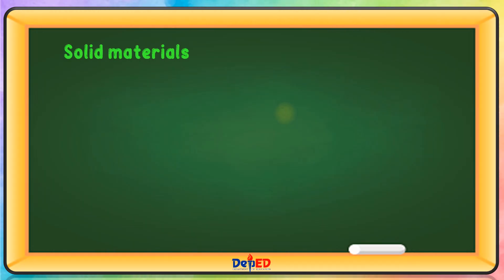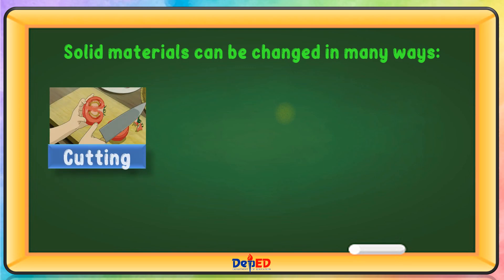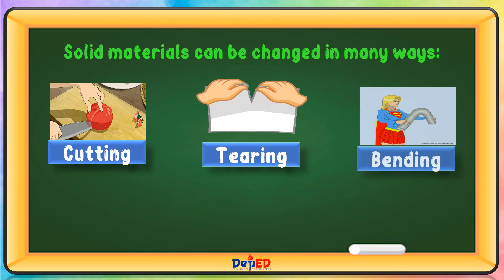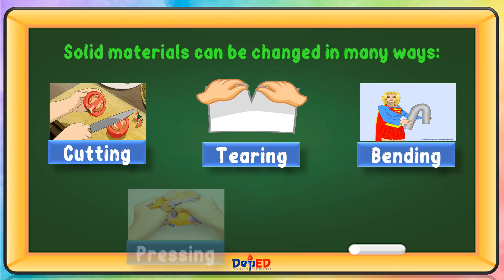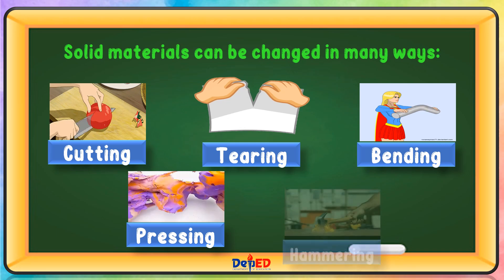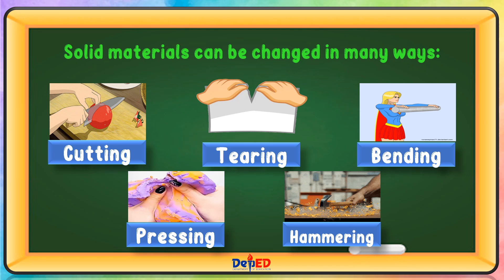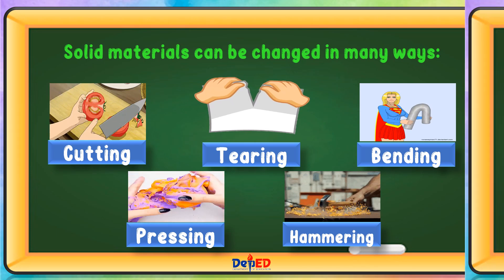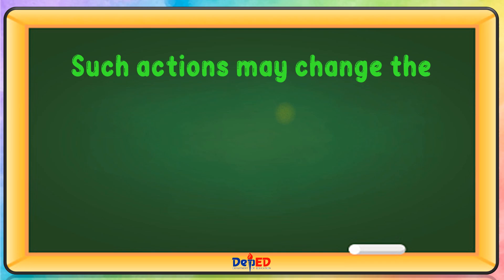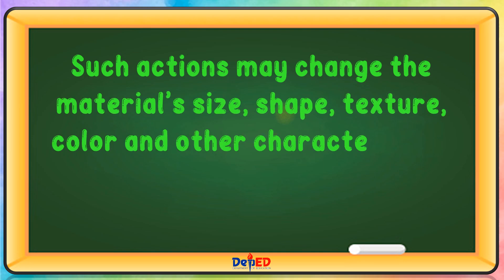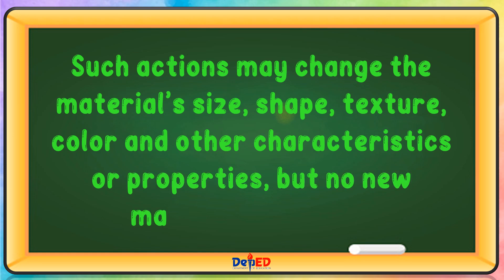Solid materials can be changed in many ways, such as cutting, tearing, bending, pressing, and hammering. Such actions may change the material's size, shape, texture, color, and other characteristics or properties, but no new material is formed.